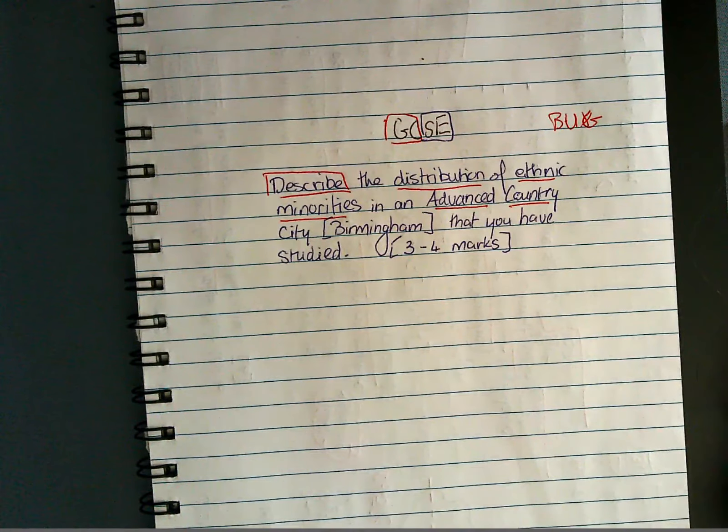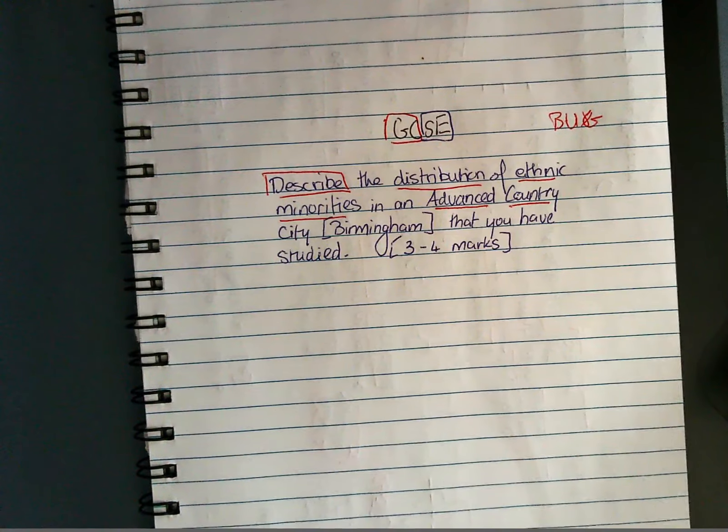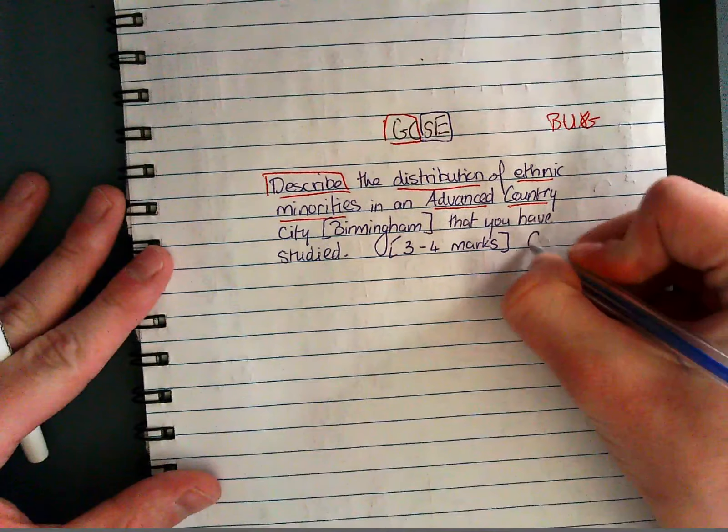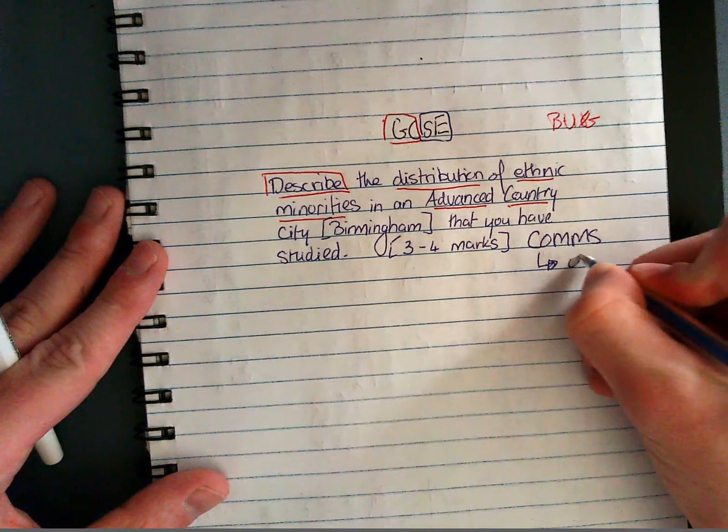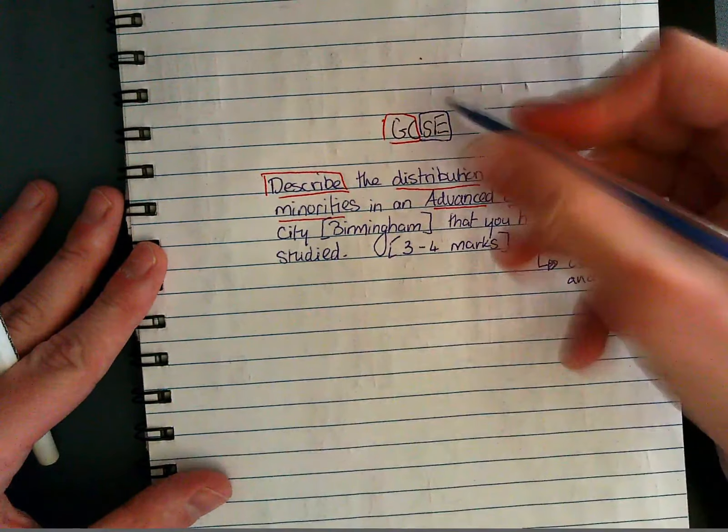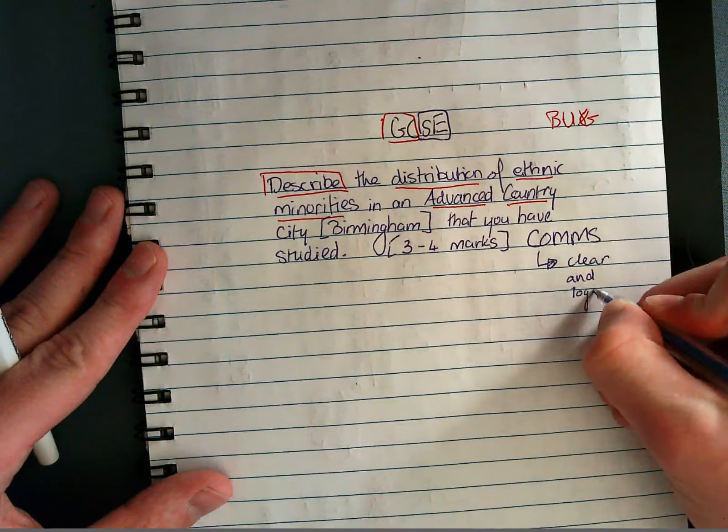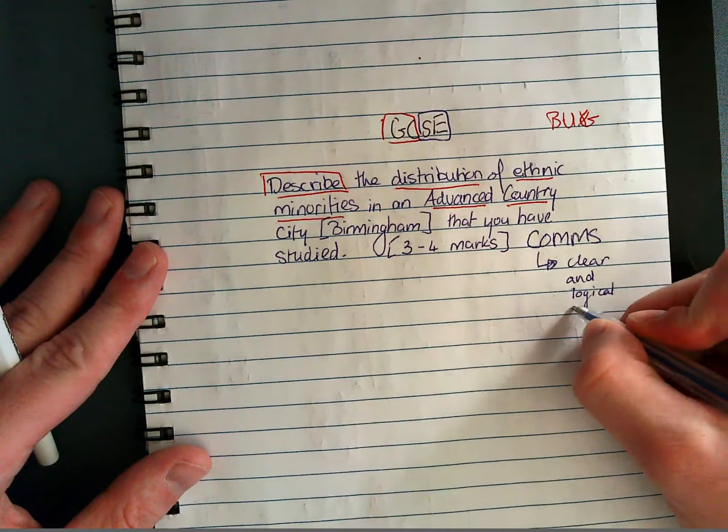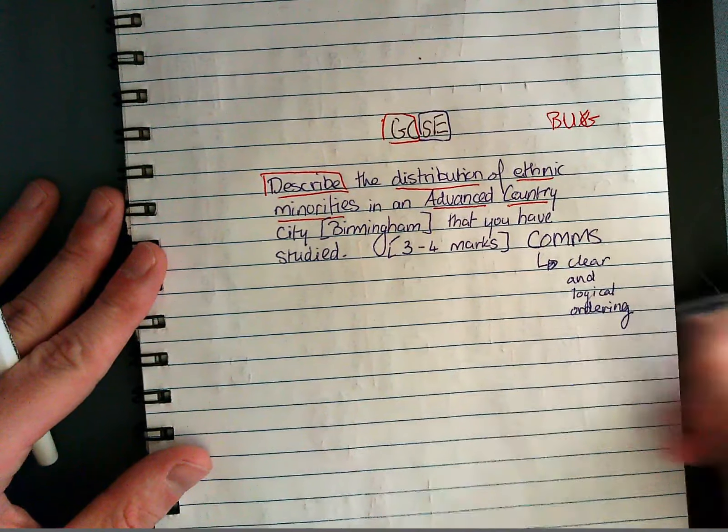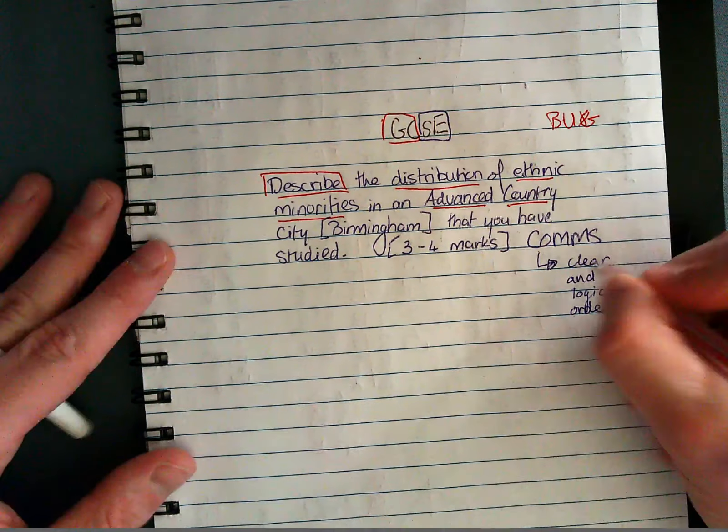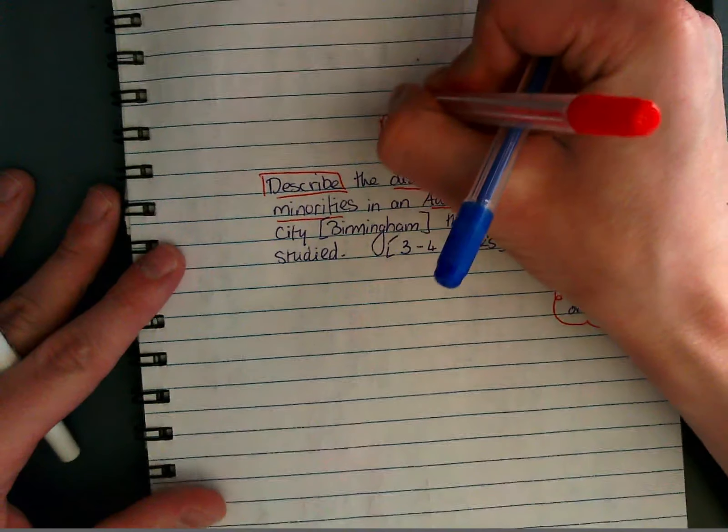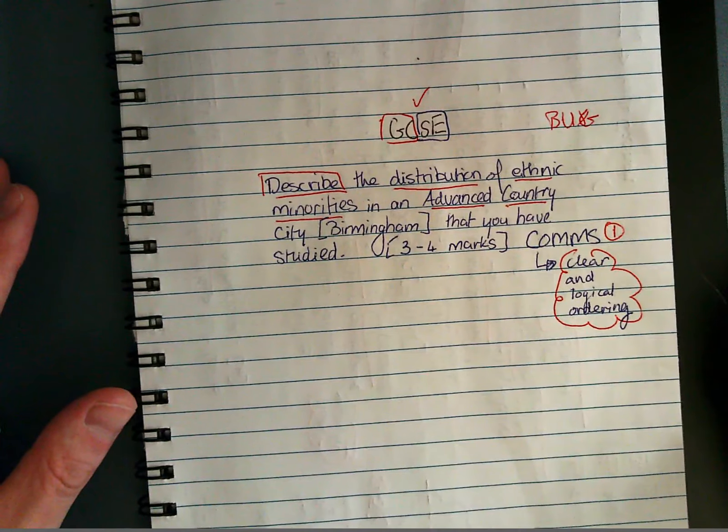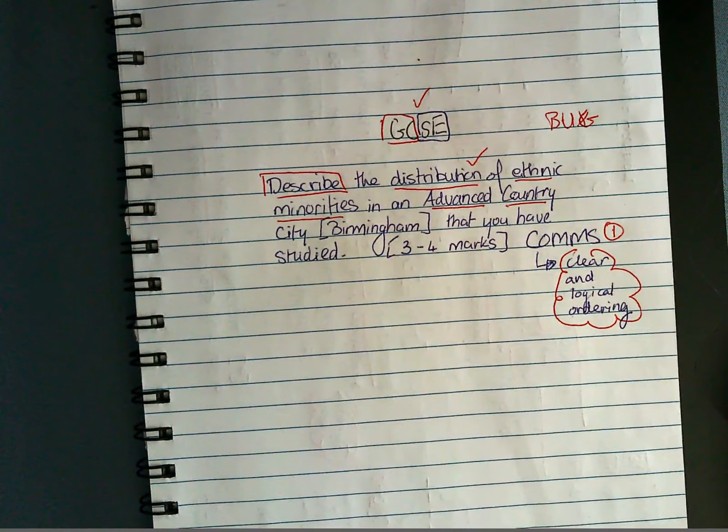Okay and this question could come up as three or four marks and it'll just depend on the amount that you're expected to write. As well as having a comms mark, which is basically trying to get the clear and logical ordering of your answer by using GCSE in the right order. We want to make sure that we get that access to that one mark. We're going to get our marks for our GCSE as well. We're also going to get marks for mentioning the distribution, referring to data in terms of describing that distribution.